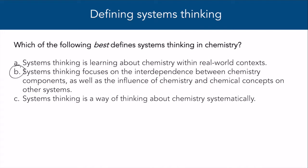Correct. Systems thinking in chemistry can allow us to consider how chemical systems behave, how chemistry influences other systems, and also how other systems influence chemistry.